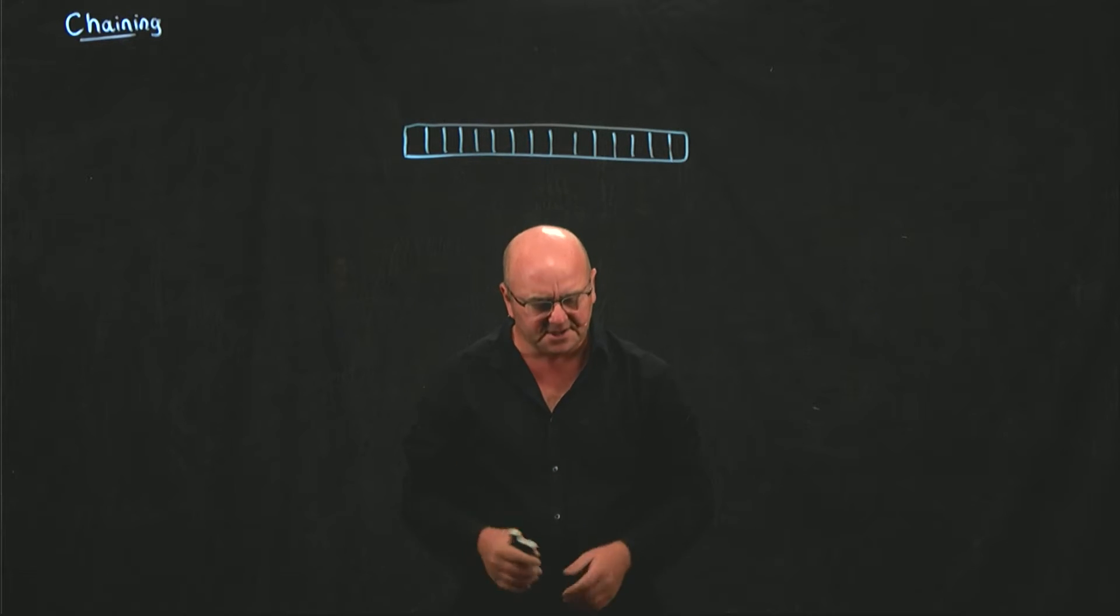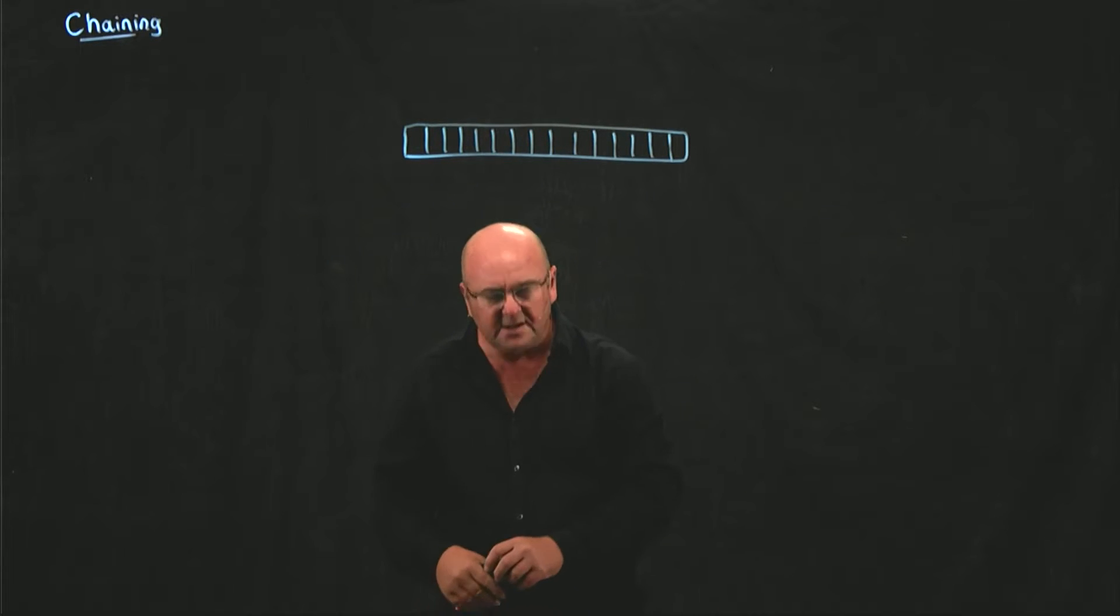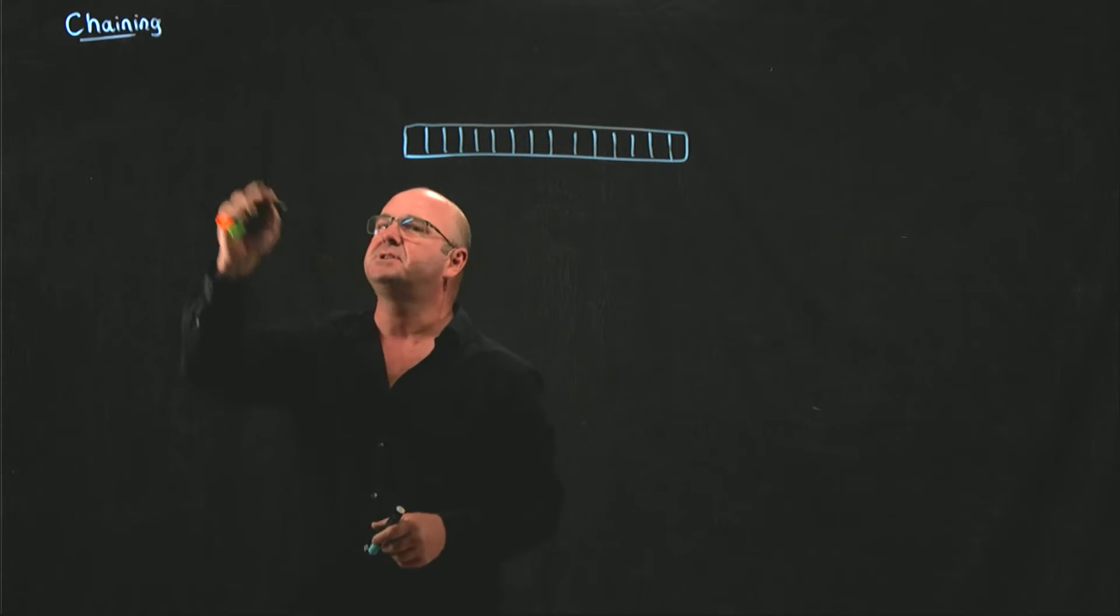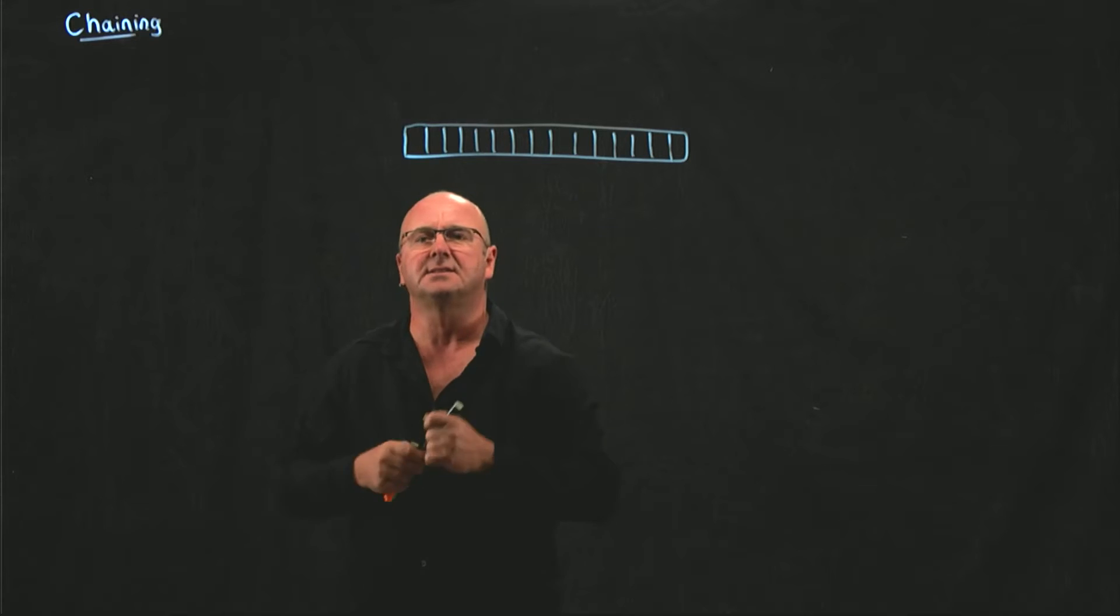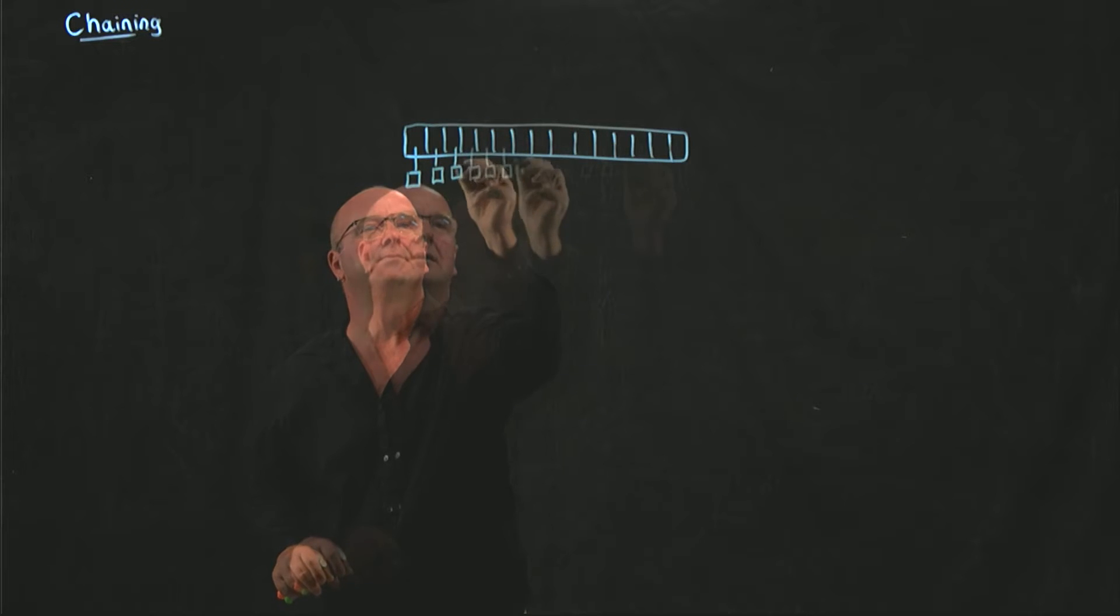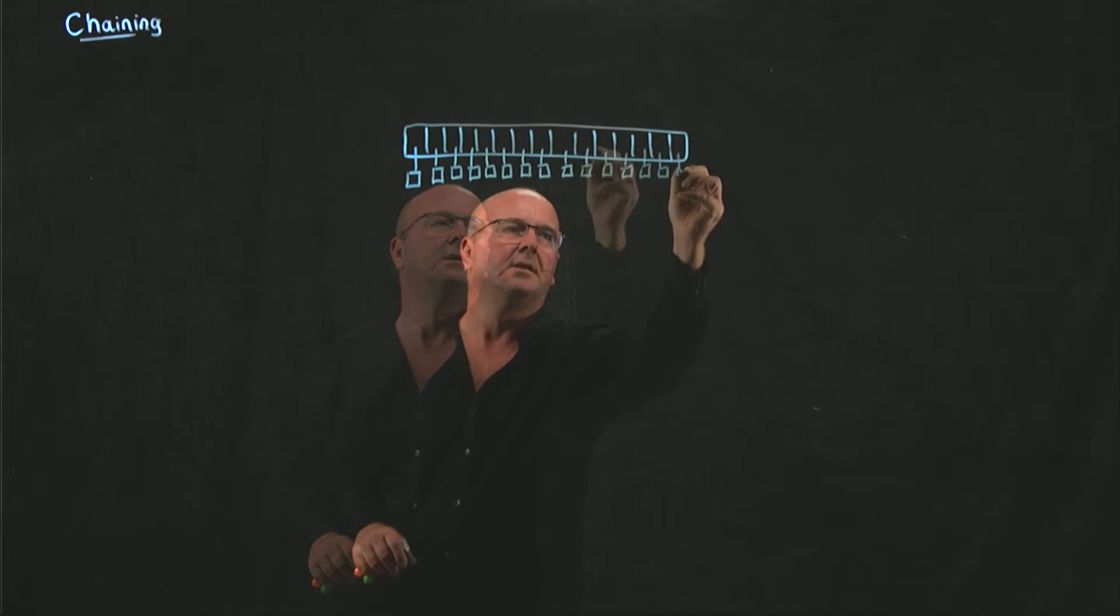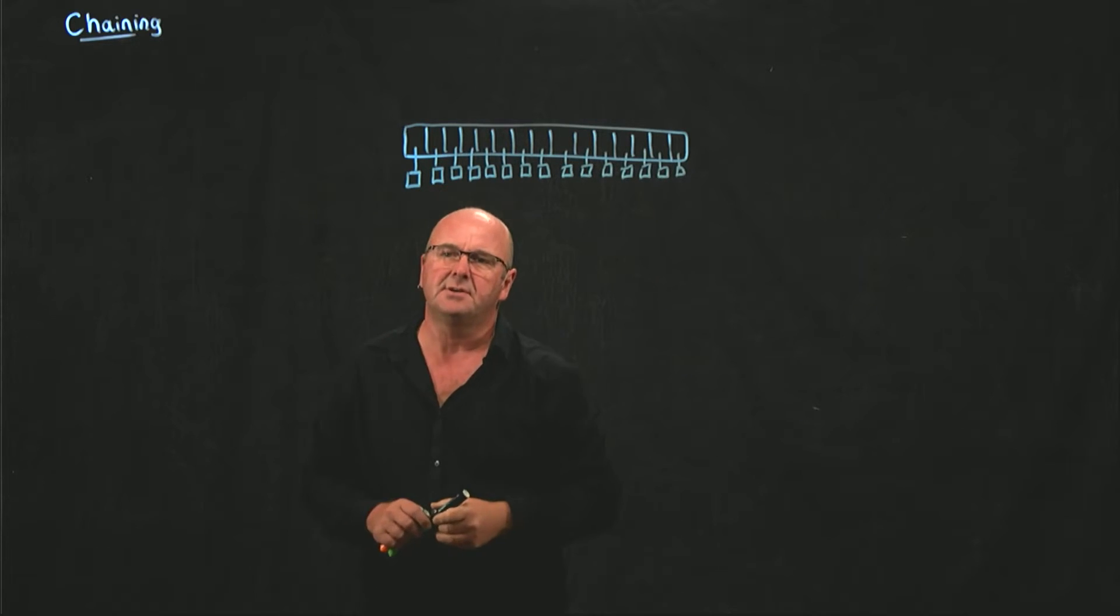And so which data structure should we use for that? One you've already used before. We can use our linked list. So the idea with chaining is that we build an array like this, and in every position we build a linked list. So every position we have head nodes.